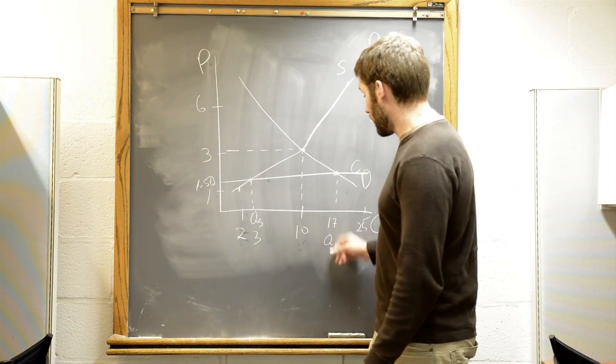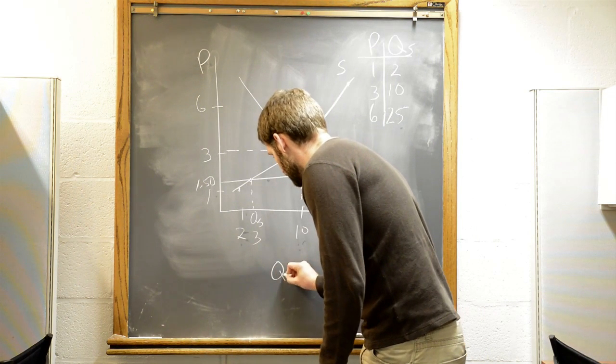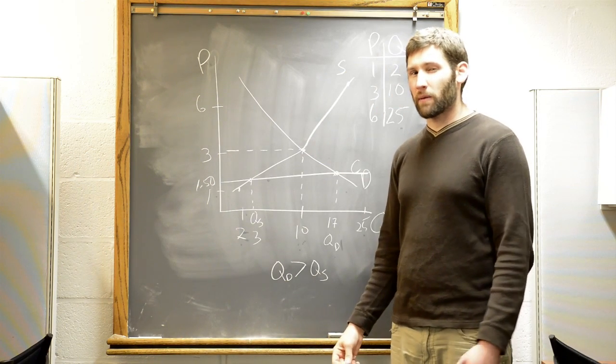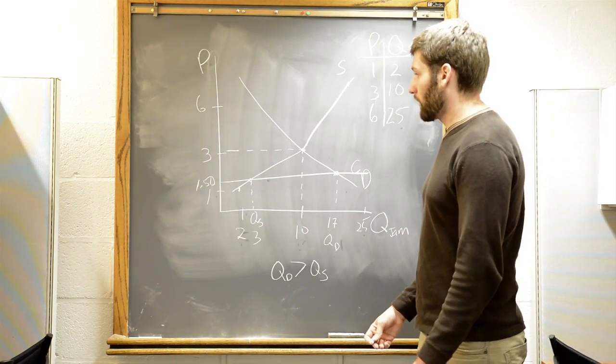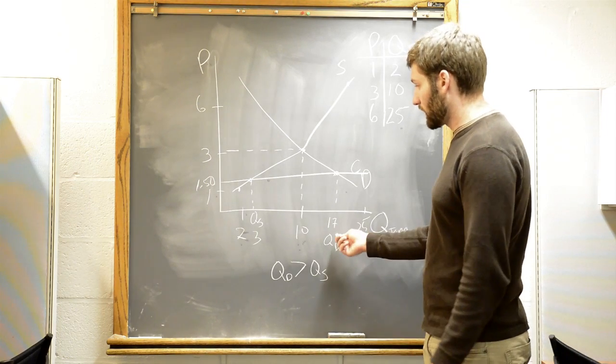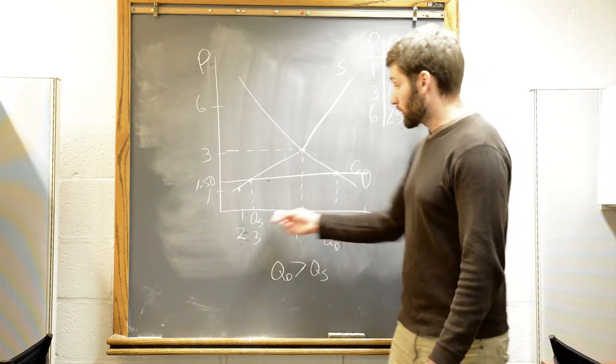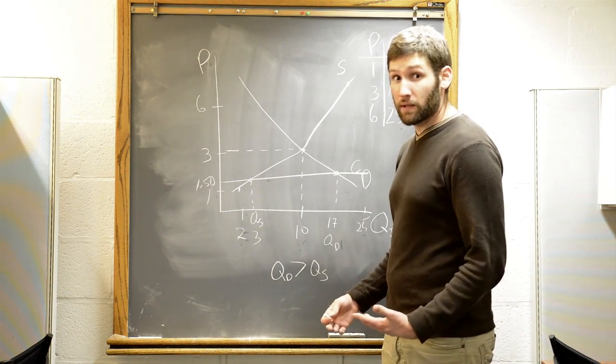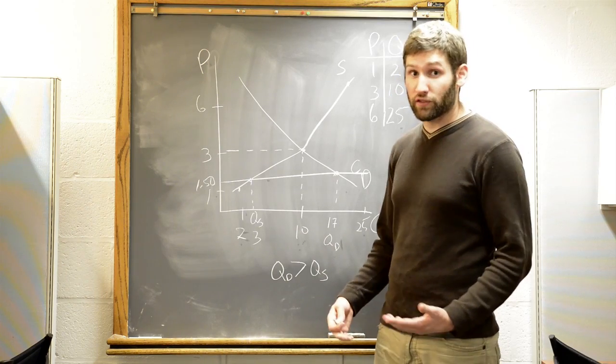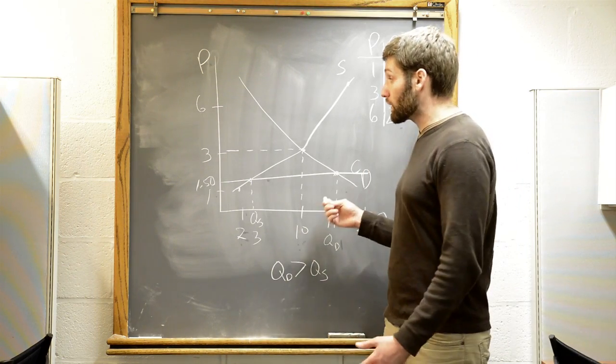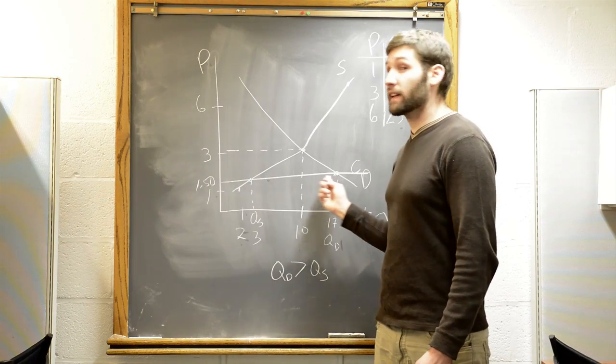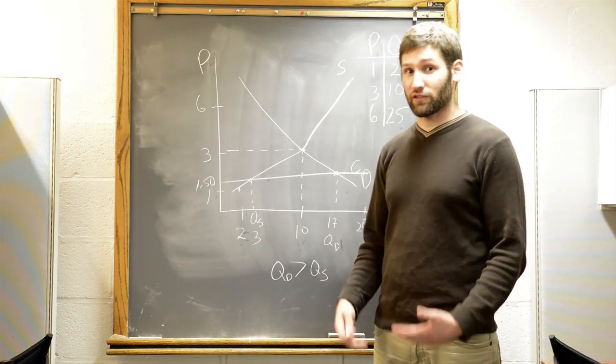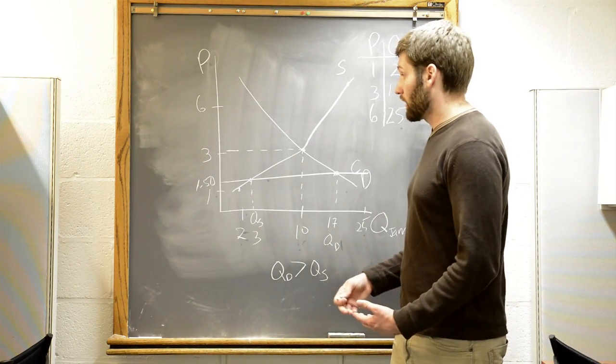So here, the quantity demanded is greater than the quantity supplied. I wouldn't work on memorizing that. Think about what happens if you go to the supermarket. There's 17 people that want to buy jam. There's only 3 jars on the shelf. That means that we have 14 people, or 14 jars of jam, of shortage, which is people want to buy it. They're willing and able to pay the price, but it's just not there. So this is a shortage, and this happens when we use a price control that stops the price from rising.